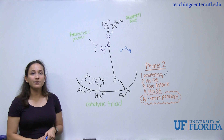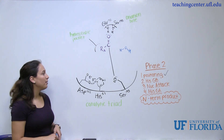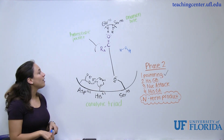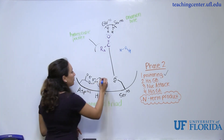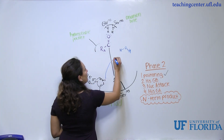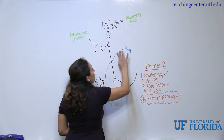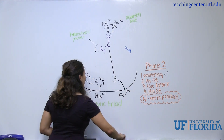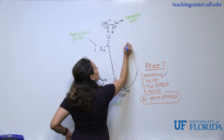The second step is histidine acting as a general base again. This time, histidine is not going to take a proton from serine, because serine no longer has a proton — that proton was donated into the C-terminal product. Instead, histidine takes a proton from water by donating its electrons to form a bond with the hydrogen. This forms a hydroxyl group, which will now perform the nucleophilic attack.